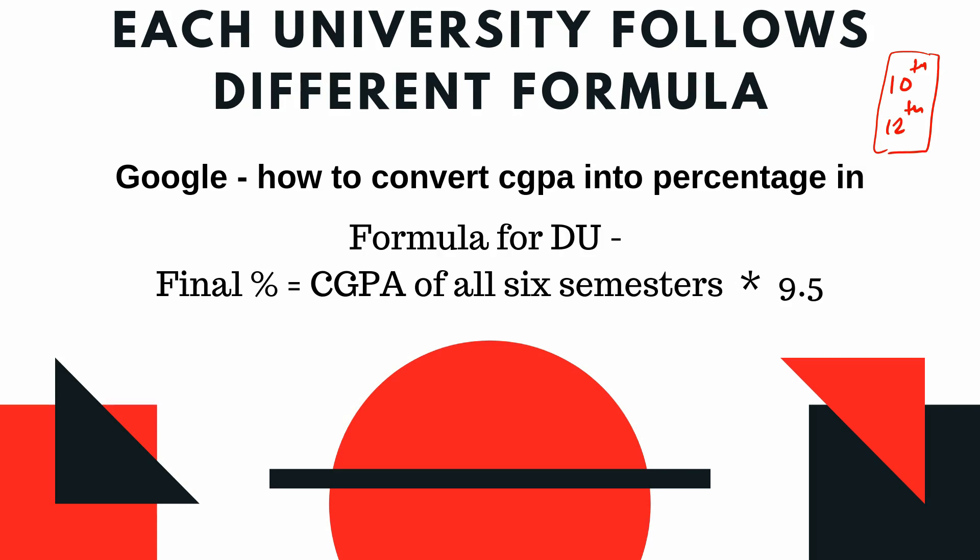So use the formula that is written on your mark sheet for how to convert CGPA to percentage. If your 10th or 12th mark sheet has marks listed, then take the total marks on the sheet and the total obtained marks — that will give you your percentage. This is the simple method for 10th and 12th.